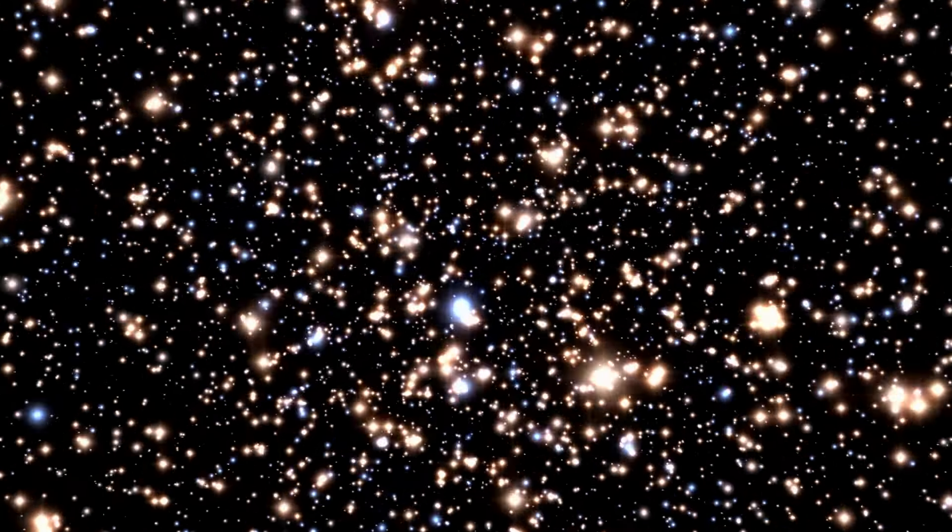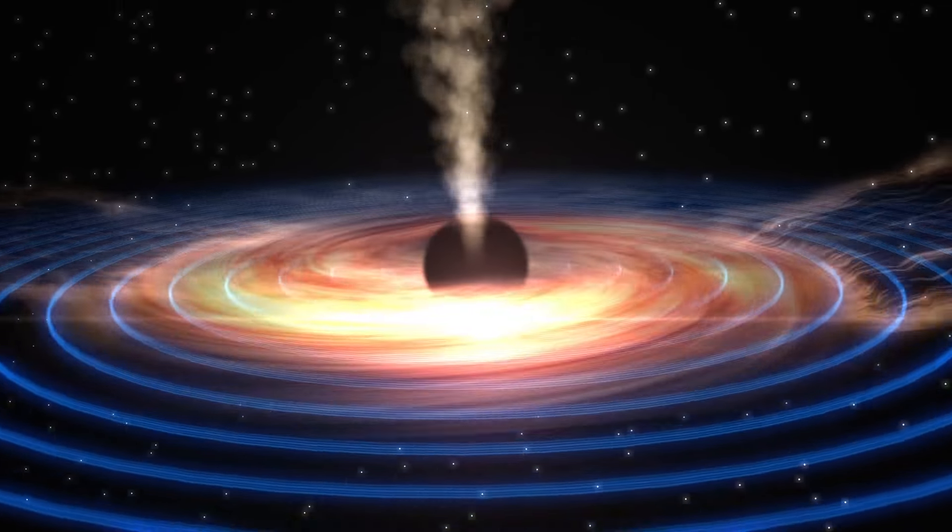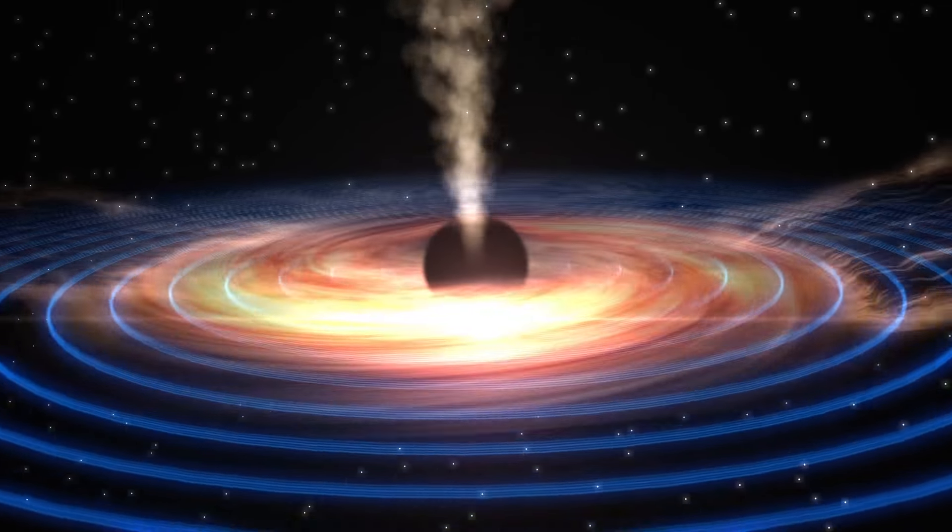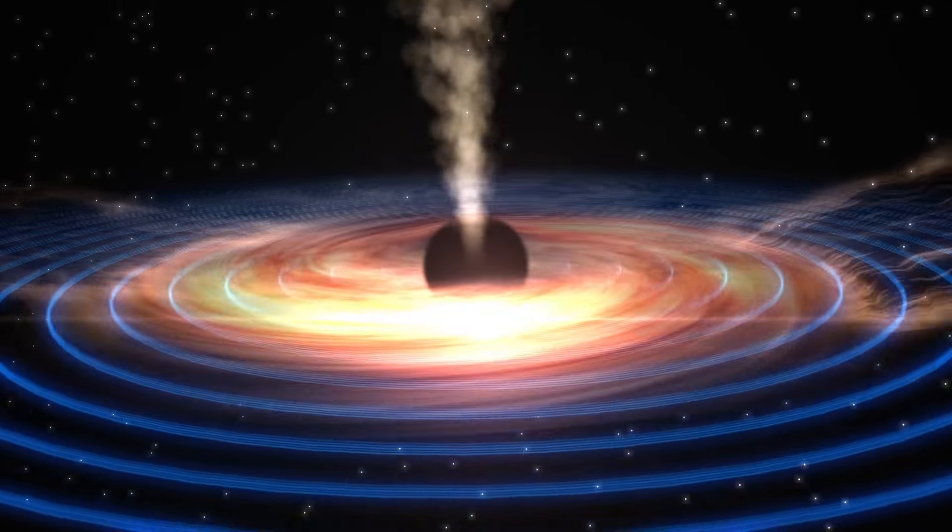Another way to identify a black hole is to catch one gobbling up stars or gases. As gases are sucked into a black hole, they first flatten into a disk. Although black holes have a reputation as mighty vacuum cleaners, they can also act like giant leaf blowers. As the gases swirl around the disk, friction causes them to superheat and to produce intense radio waves. If these radio waves can be detected, they can indicate the presence of a black hole.